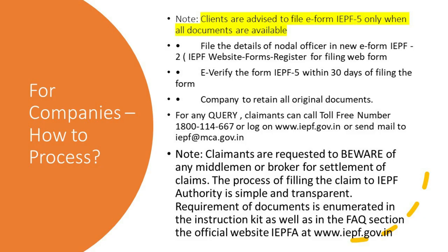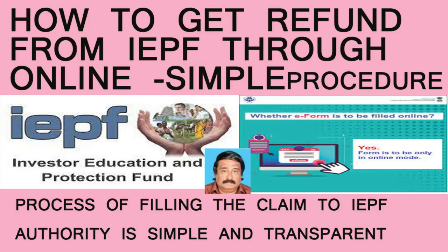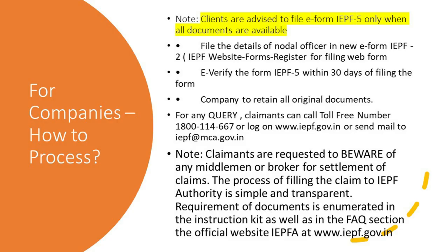For any queries, clients can call the toll-free number 1800-11-4667, log on to www.iepf.gov.in, or send an email to iepf@mca.gov.in. Note: claimants are requested to beware of any middleman or broker for settlement of claims. The process of filing the claim with the IEPF authority is simple and transparent, and the document requirements are listed in the instruction kit as well as in the FAQ section of the official website.